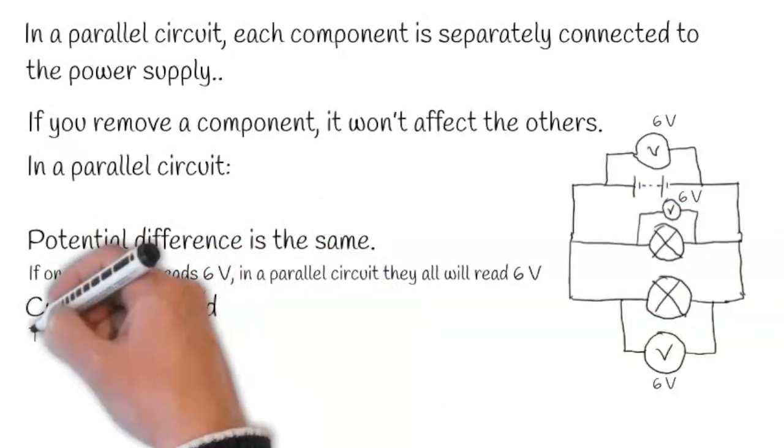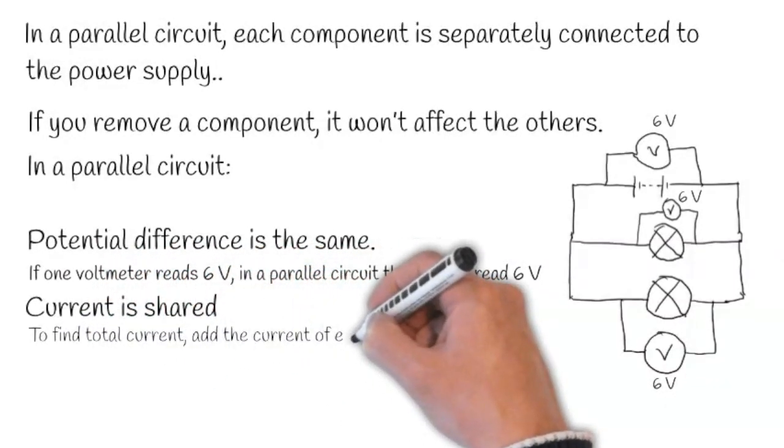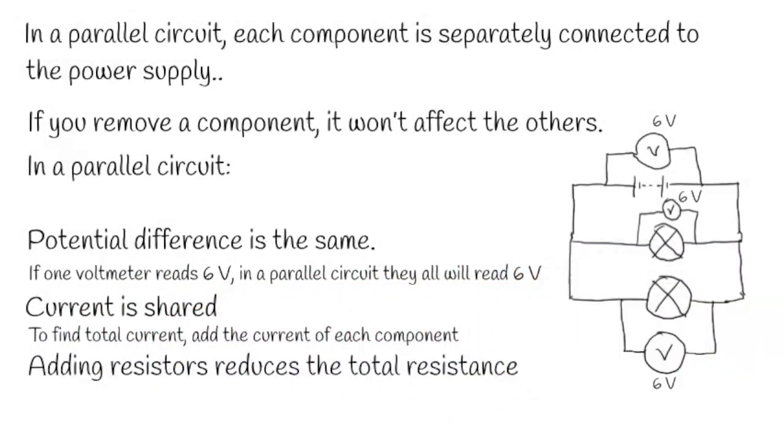Current is shared. To find the total current, add the current of each component. Adding resistors reduces the total resistance in a parallel circuit.